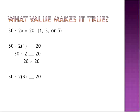We substitute that value of 3 in where we see the x. 2 times 3 is 6. 30 minus 6 is 24, and 24 is not equal to 20. So therefore, 3 is also not the correct solution. This is a pattern we're going to be following here. Let's go on and check 5.